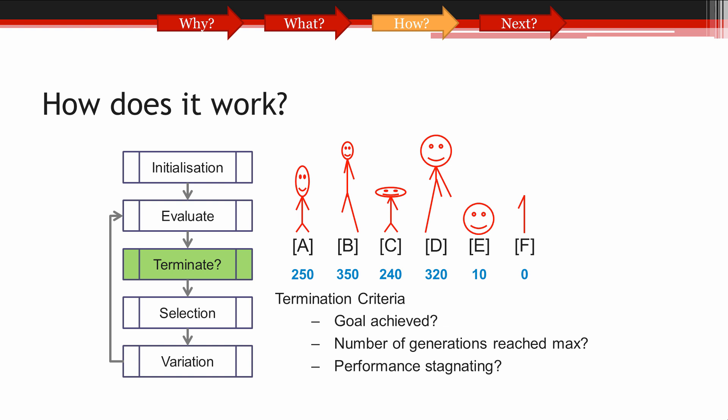Otherwise, we'll continue. Maybe we just want to run the evolutionary process for a specific number of generations. So we'll check to see if the current number of generations has reached the maximum allowed. Or we simply terminate the process when there is no longer any significant improvement being made to the fitness scores from generation to generation. For the purpose of this demonstration, let's assume the termination criteria has not been satisfied so we can continue to the next stage.